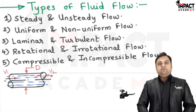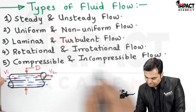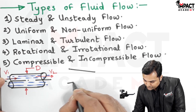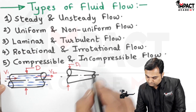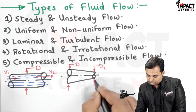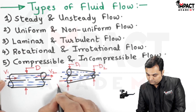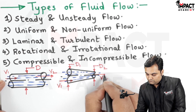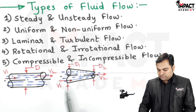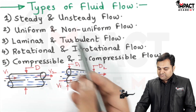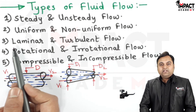In case of non-uniform flow, the velocity will change. For example, in a tapered pipe having different diameters, the velocity at different sections is also different, so that is an example of non-uniform flow.